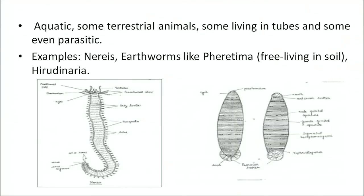Ascaris is a common roundworm, parasitic in nature, found in the intestine of humans. Pinworm and Wuchereria — the filaria worm — are some other examples. The next phylum is phylum Annelida, which includes earthworms. They are elongated, segmented, and coelomate — meaning they have a true body cavity.